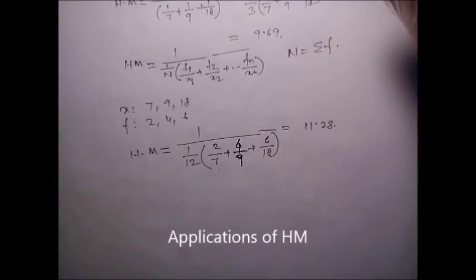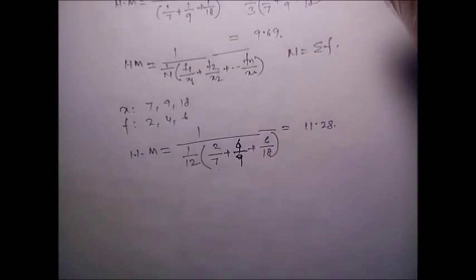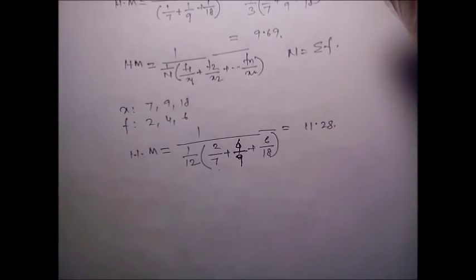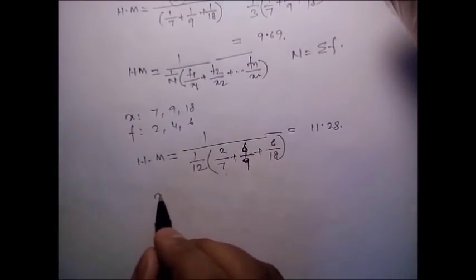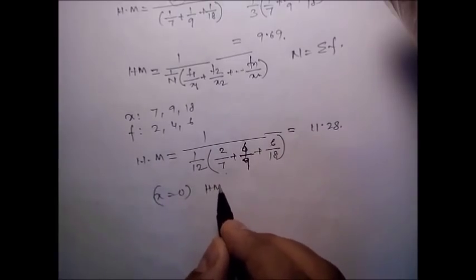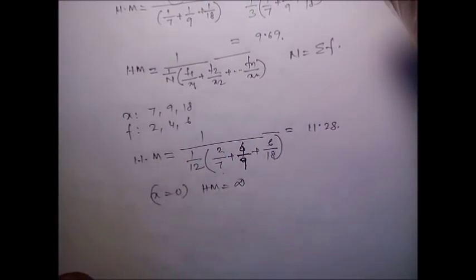Harmonic mean is used when numbers naturally combine via the reciprocal — for example, combining resistance in a parallel electric circuit. Merits: rigidly defined, based upon all observations, suitable for further mathematical treatment, not affected by fluctuations of sampling, gives greater importance to small items. Demerits: if any observation is 0, harmonic mean is undefined/infinite.